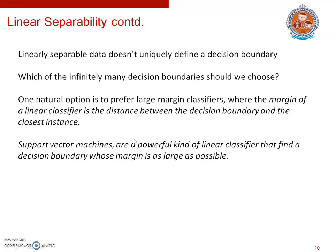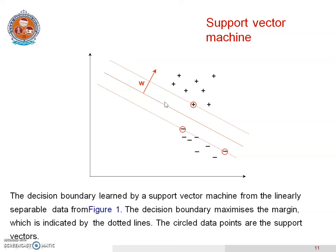One natural option is to prefer large margin classifiers, where the margin of a linear classifier is the distance between the decision boundary and the closest instance. Support vector machines are a powerful kind of linear classifier that find a decision boundary whose margin is as large as possible. In this diagram, the SVM identifies a decision boundary that separates the data points of the plus class from those of the minus class with the help of support vectors. The circled data points are called support vectors.